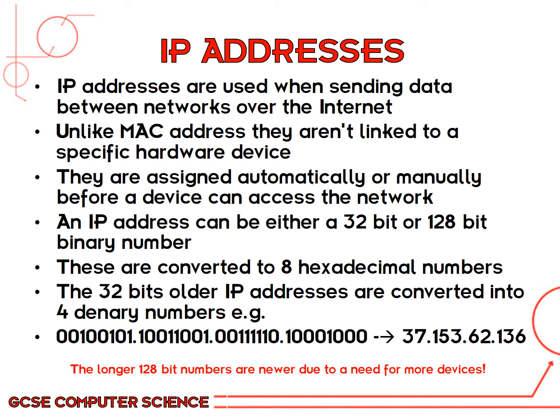Unlike a MAC address, an IP address can be assigned to anything that is connected to the internet. An IP address is used when sending data between networks over the internet, and unlike a MAC address, it is not linked to a specific hardware device. These IP addresses are assigned either automatically or manually before a device can access the network. An IP address used to be a 32 bit binary number, which would be converted into 4 binary numbers.